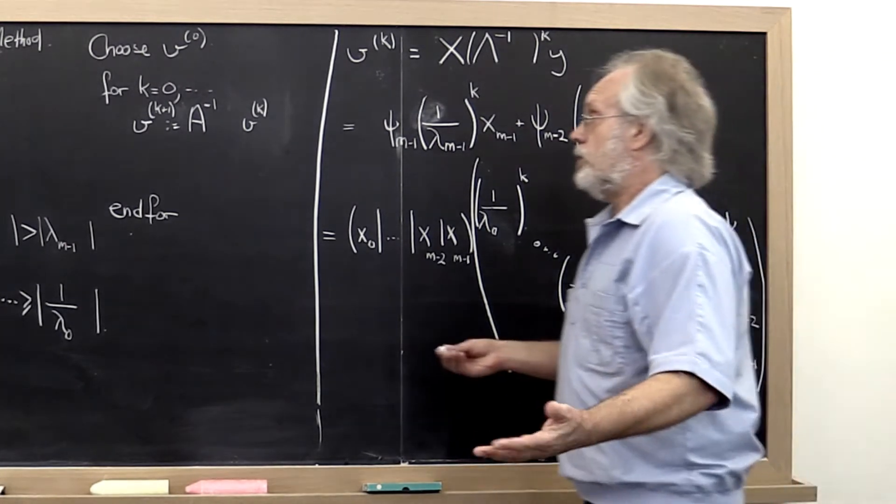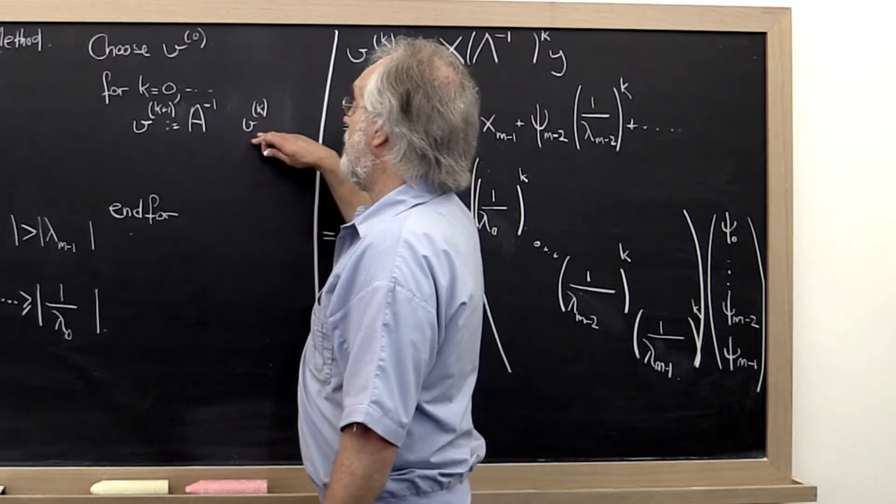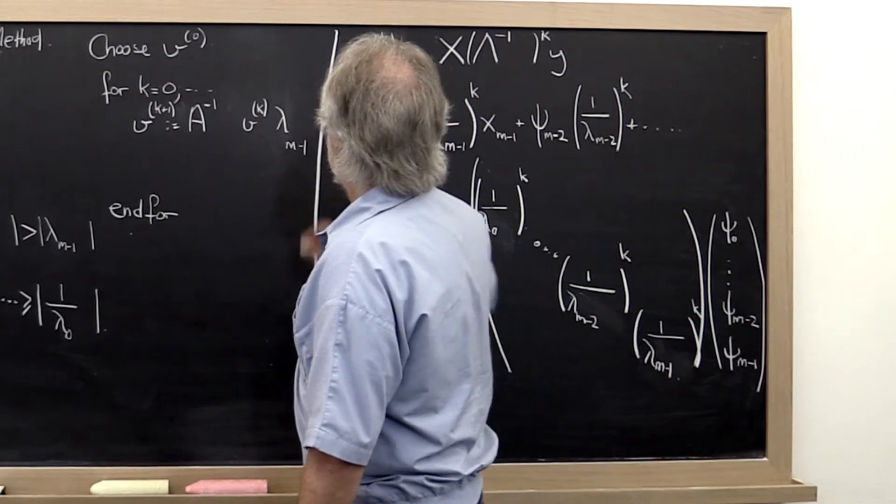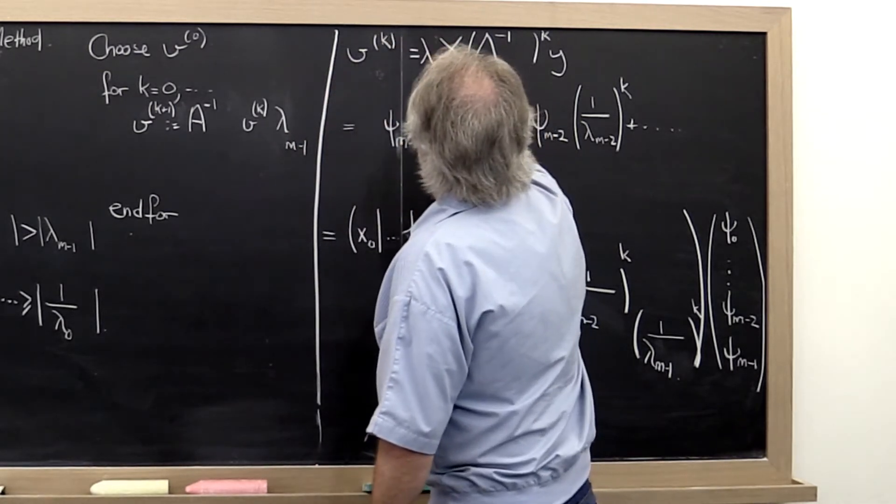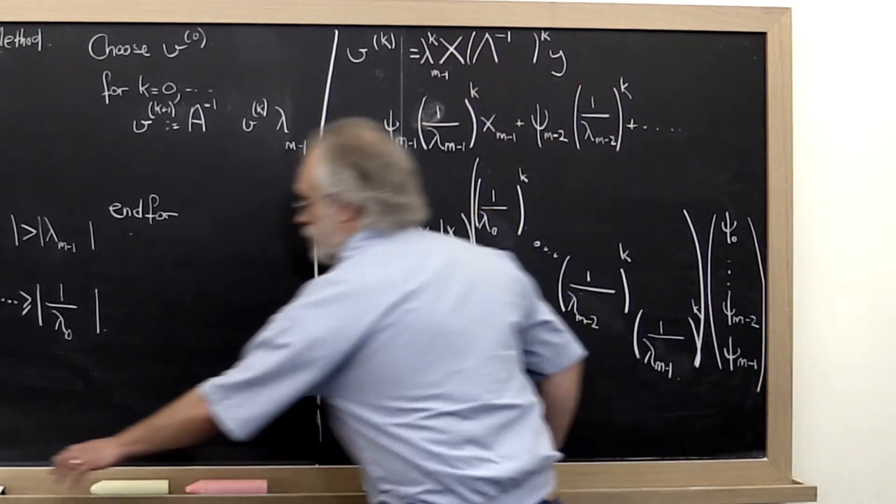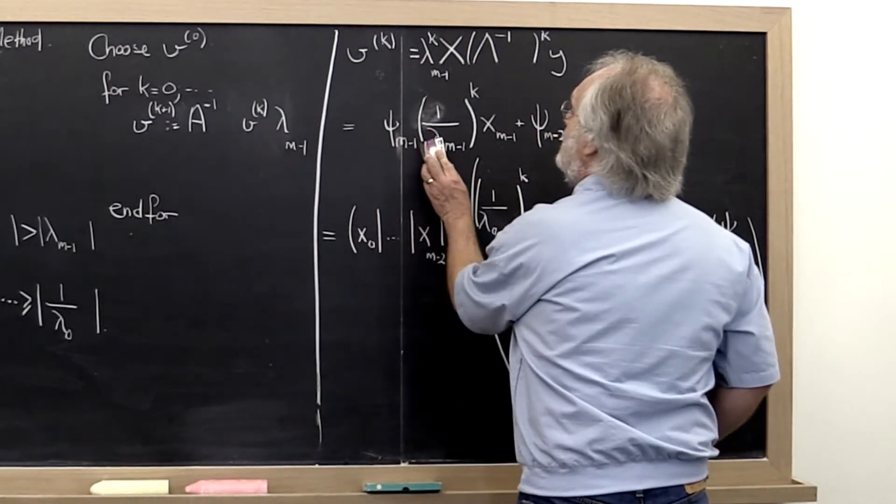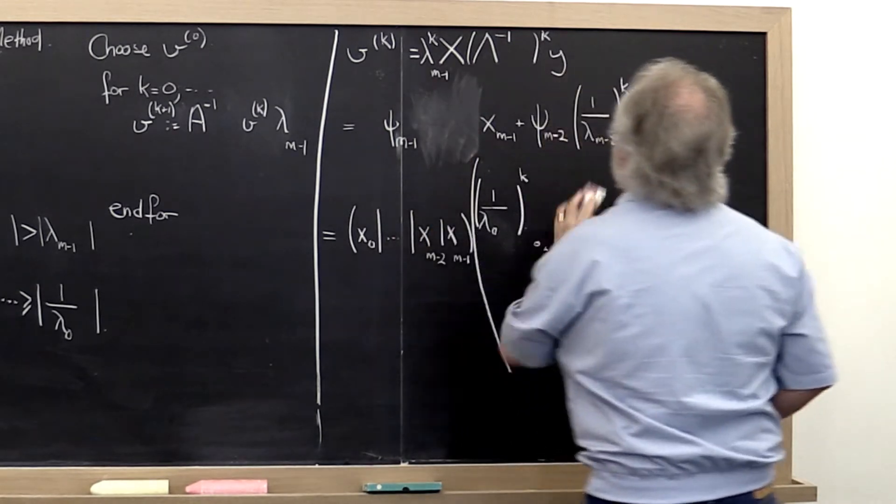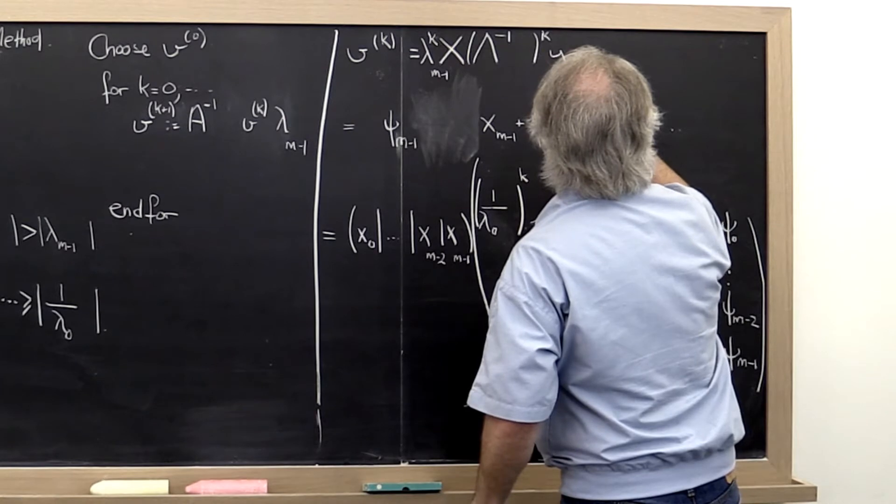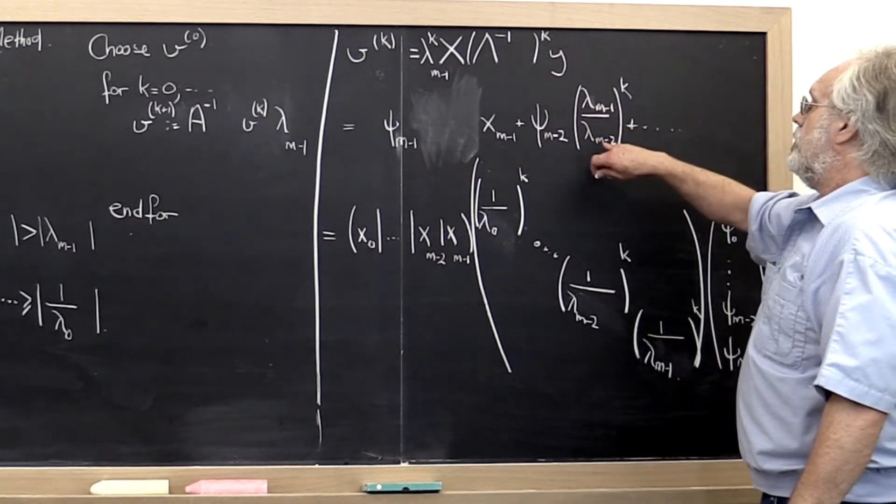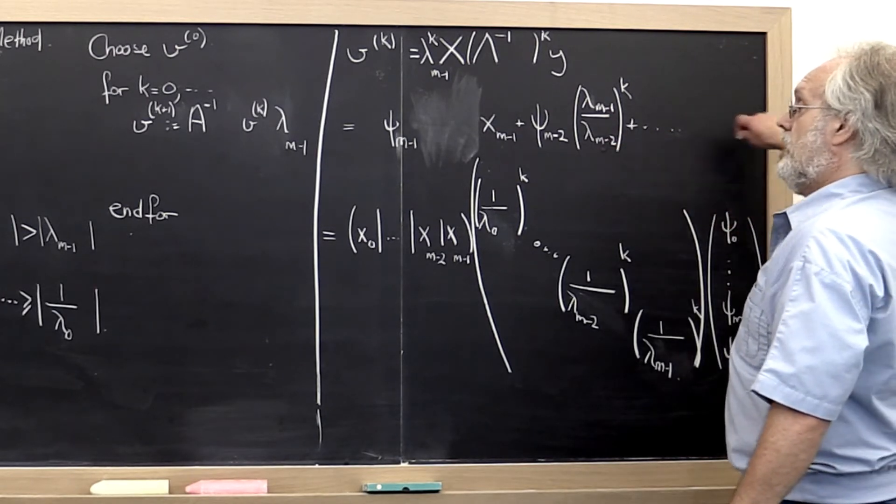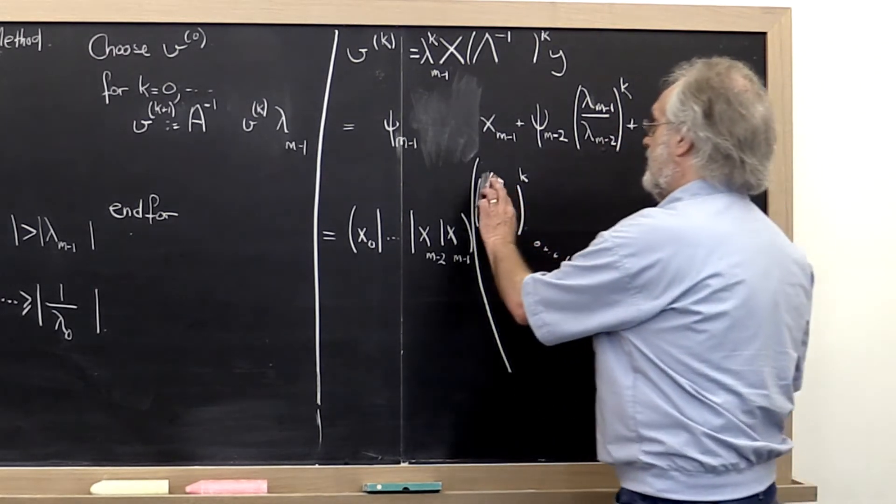In order to analyze this, then what we would do is say instead of dividing by lambda zero, let's multiply by lambda m minus 1. In that case we get lambda m minus 1 to the kth power here. This first term here is replaced by 1, and these terms are all replaced by the ratios between the smallest eigenvalue in magnitude and the next smallest eigenvalue in magnitude for this term and so forth. And the same thing then happens here.